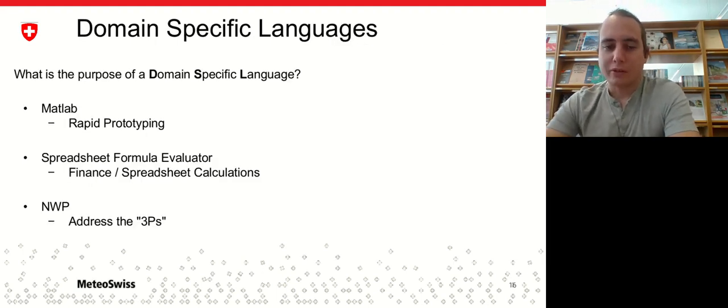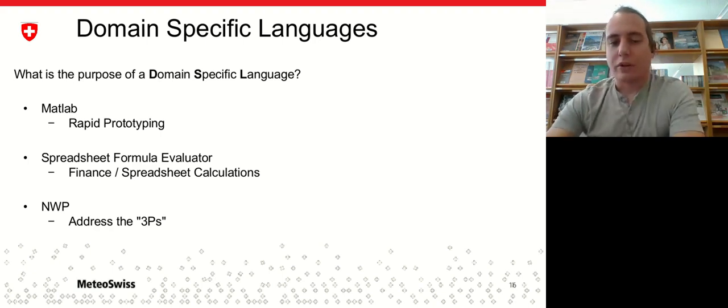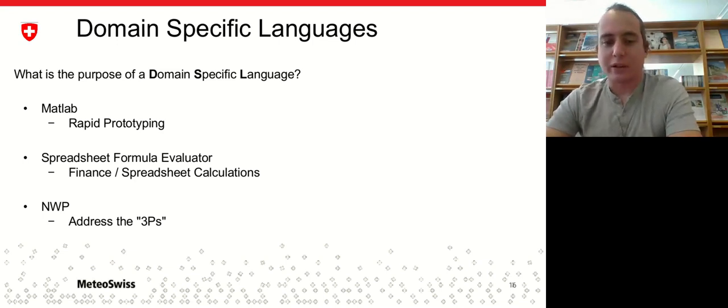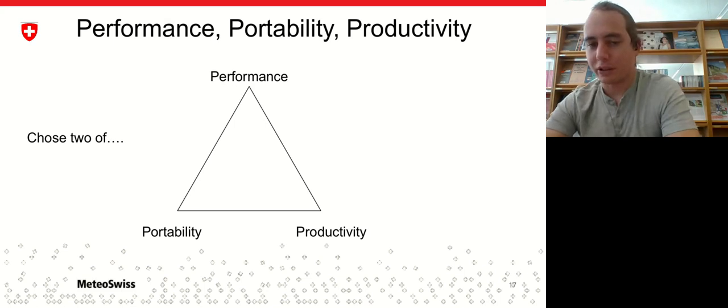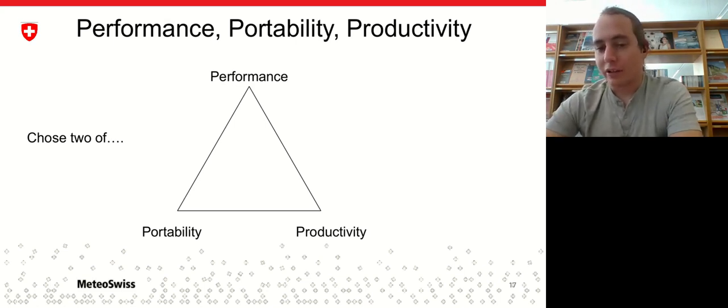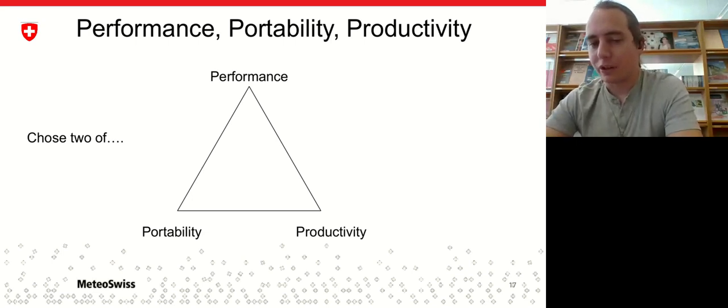Now circling back to the purpose of DSLs, having understood what DSLs really do, we can now formulate what we are actually trying to address with the DSLs in the NWP context. And this is typically conceptualized as the three P's, which stands for performance, portability, and productivity. Classically, this is kind of a choose two kind of problem. As soon as you commit to two of these goals, the third one becomes contradictory.